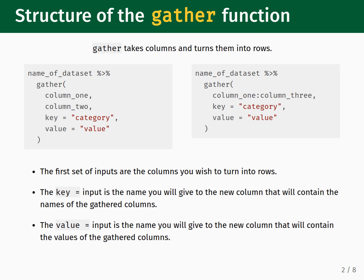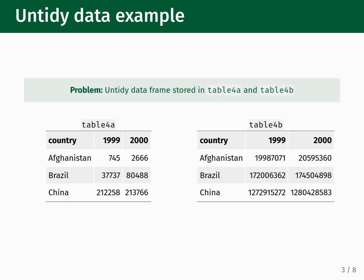To illustrate how the gather function works in practice, let's consider an example using the sample tables distributed as part of the tidyr package. The tables named Table 4A and Table 4B contain a subset of data taken from the 2014 World Health Organization Global Tuberculosis Report. They report the number of tuberculosis cases broken down by year and country. Storing data in this way does not satisfy tidy data principles, hence we would classify it as untidy.